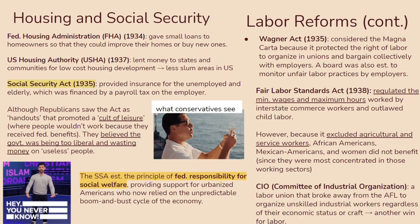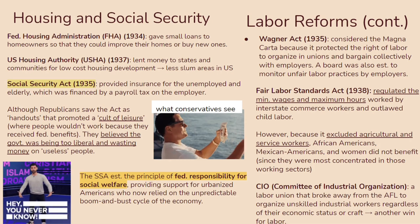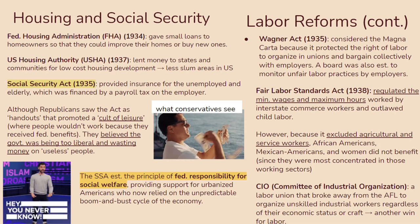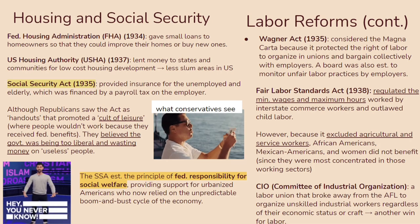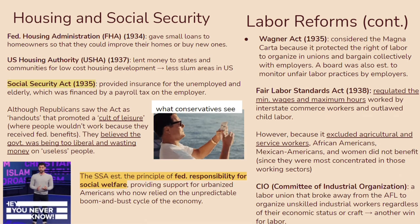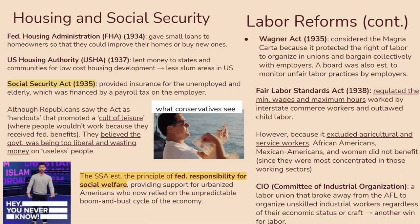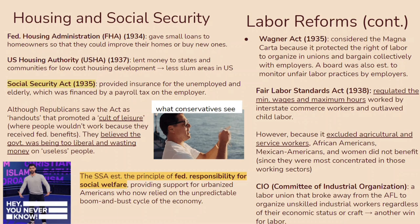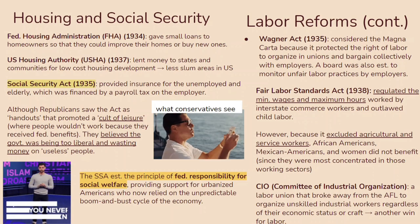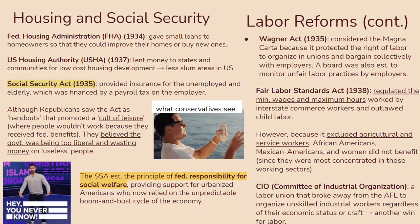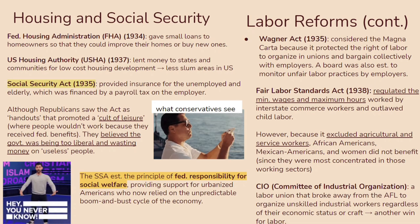Finally, you should know about the CIO — the Committee of Industrial Organization — a labor union that broke away from the AFL, the American Federation of Labor, which was really the biggest, most interconnected union in the nation at the time. The CIO worked to organize unskilled industrial workers regardless of their economic status or craft, representing another major win for labor.